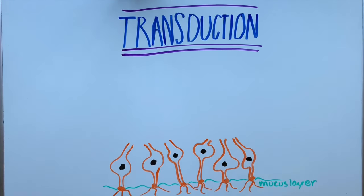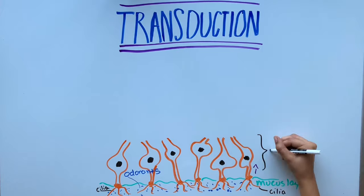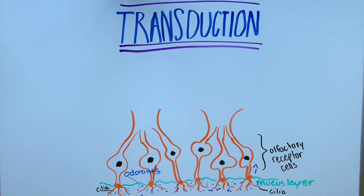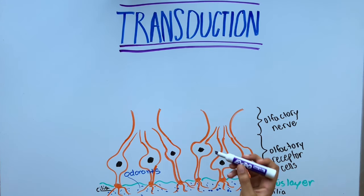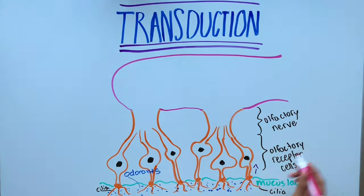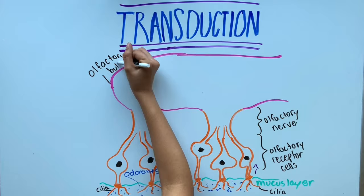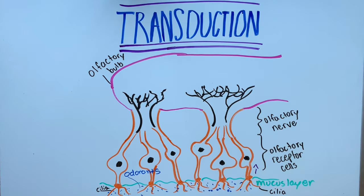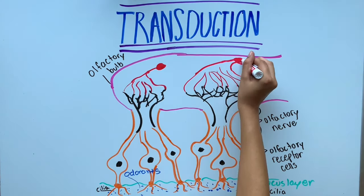When the cilia transducts information to the olfactory receptor cell, the cell sends the information through its axon. All the olfactory axons combine to create the olfactory nerve, which continue to the glomeruli, which are spherical structures located on the olfactory bulb in the brain.